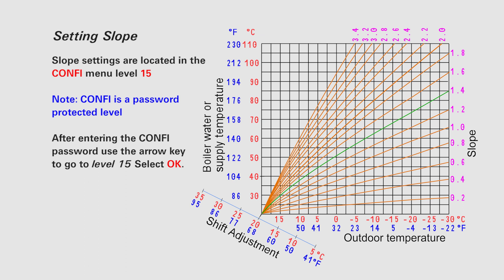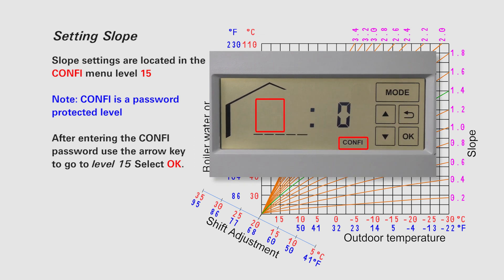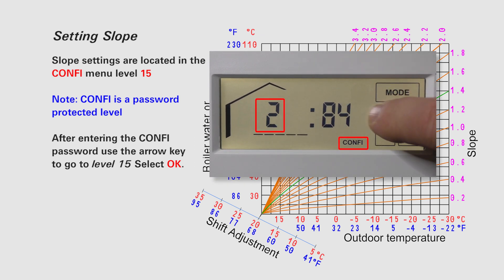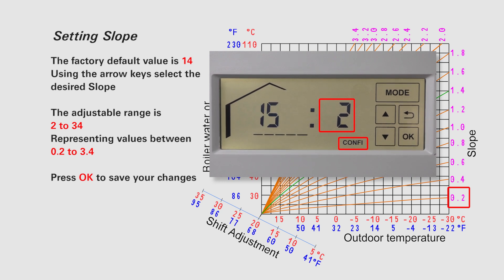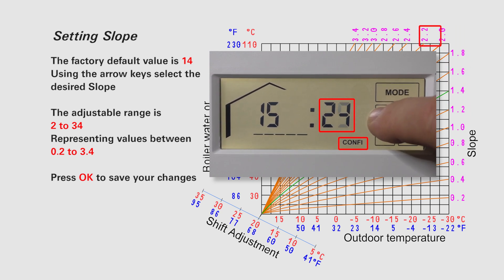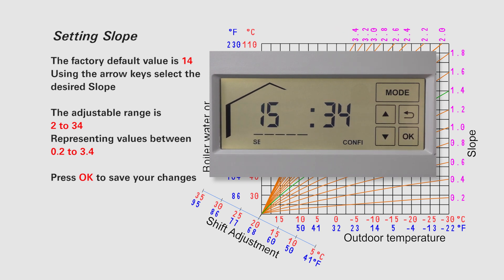Slope settings are located in the CONFI menu at level 15. Note: CONFI is a password protected level. See the video entitled Accessing Parameters for information on accessing configuration settings. After entering the CONFI password, use the arrow key to go to level 15 and select OK. The factory default setting for slope is 1.4. Use the arrow keys to select the desired slope. The adjustable range is 2 to 34, representing values between 0.2 and 3.4 on the curved chart. Press OK to save your changes.